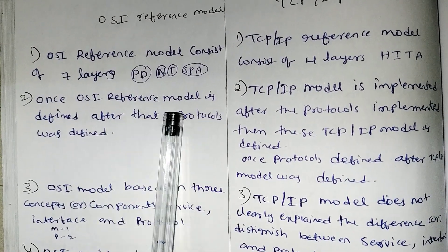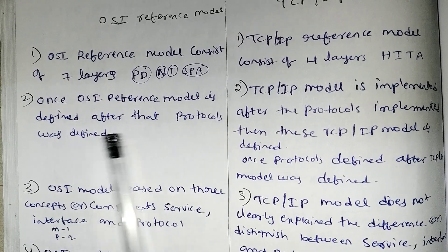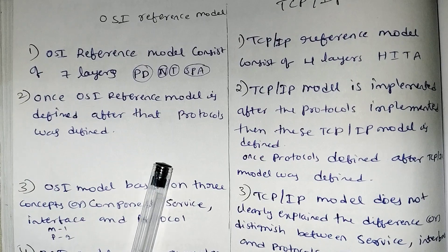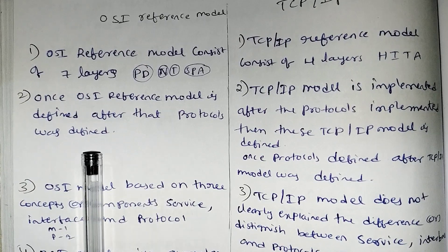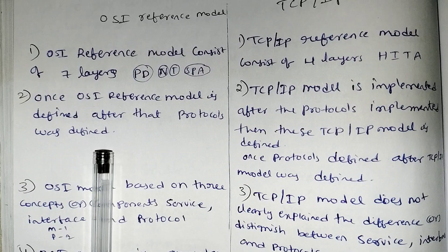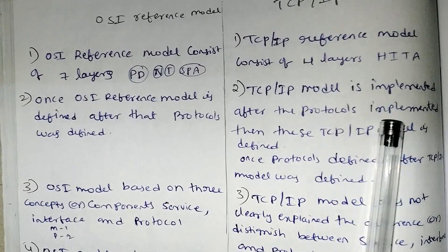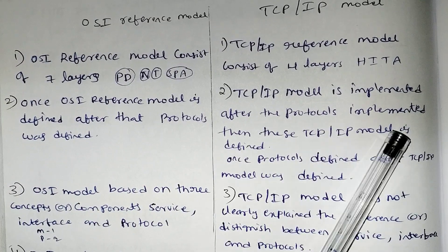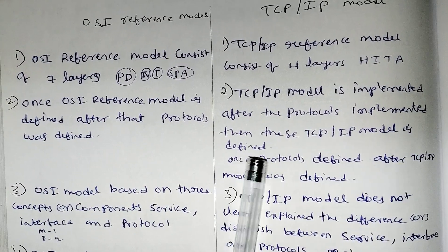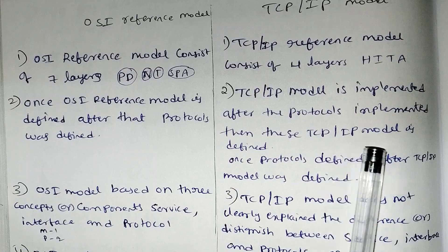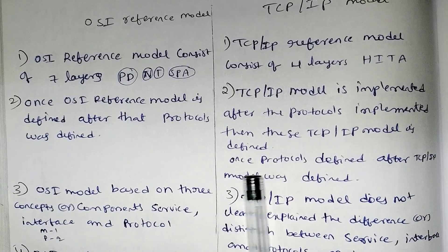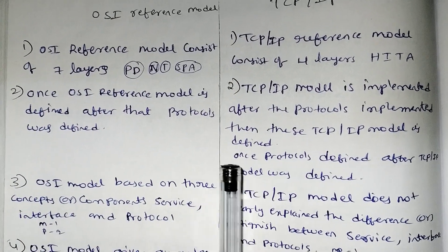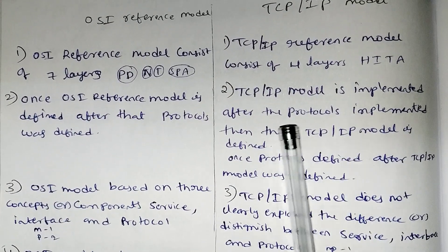Once the OSI reference model is defined, after that protocols are defined. TCP/IP model is implemented after the protocols are implemented, and then the TCP/IP model is defined. Once protocols are defined, the TCP/IP model was defined and implemented.